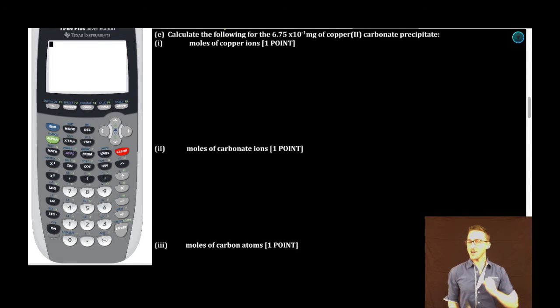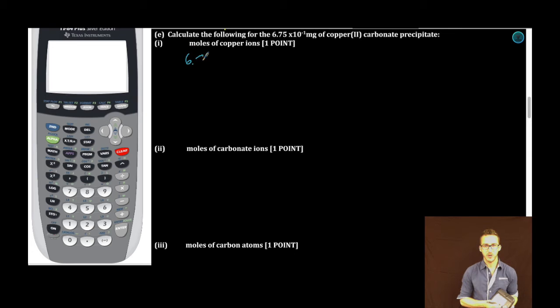And that brings us to part E, which says calculate the following for the 6.75 times 10 to the minus 1 milligrams of copper 2 carbonate precipitate. Subpart I: Moles of copper ions. You want to be jumping for joy anytime you get a really nice mole conversion problem on the free response. Just make sure to always show your work, even though I know that you know how to do it in your brain.